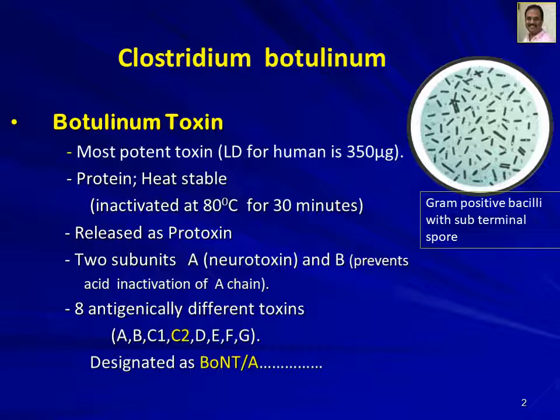The toxin has eight antigenically different types: A, B, C1, C2, D, E, F, and G. Among them, C2 is the most powerful toxin. This toxin is also designated as BOTOX or botulinum toxin A in clinical and cosmetic usage.